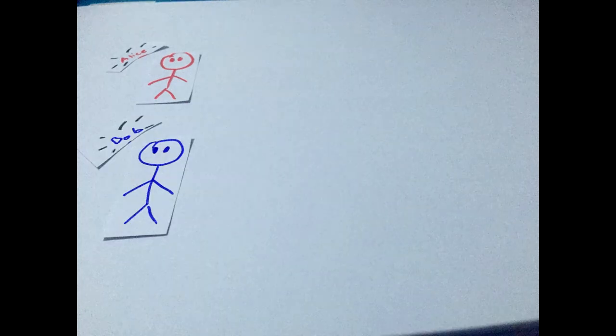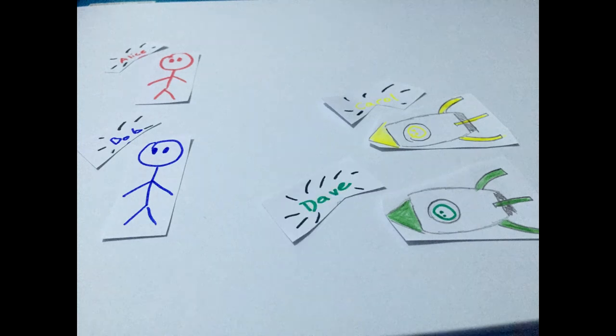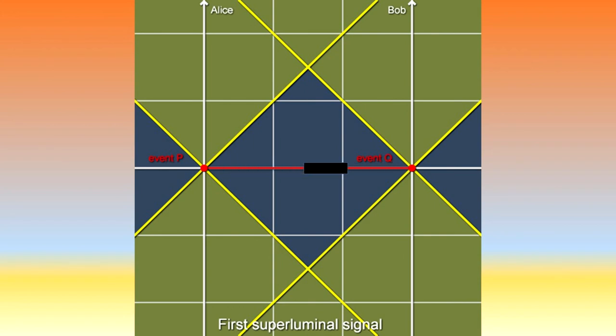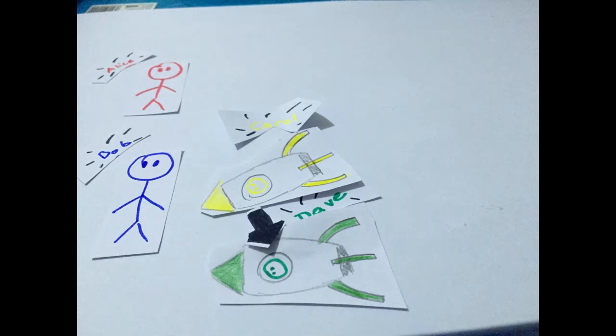Consider a system with four people: Alice and Bob, who are at rest relative to each other, and Carol and Dave, who are moving towards them at high speeds. Let's say Alice transmits a signal to Bob from event B to event Q, outside of the light cone, faster than the speed of light. When Carol meets Bob at Q, she transmits the signal to Dave.